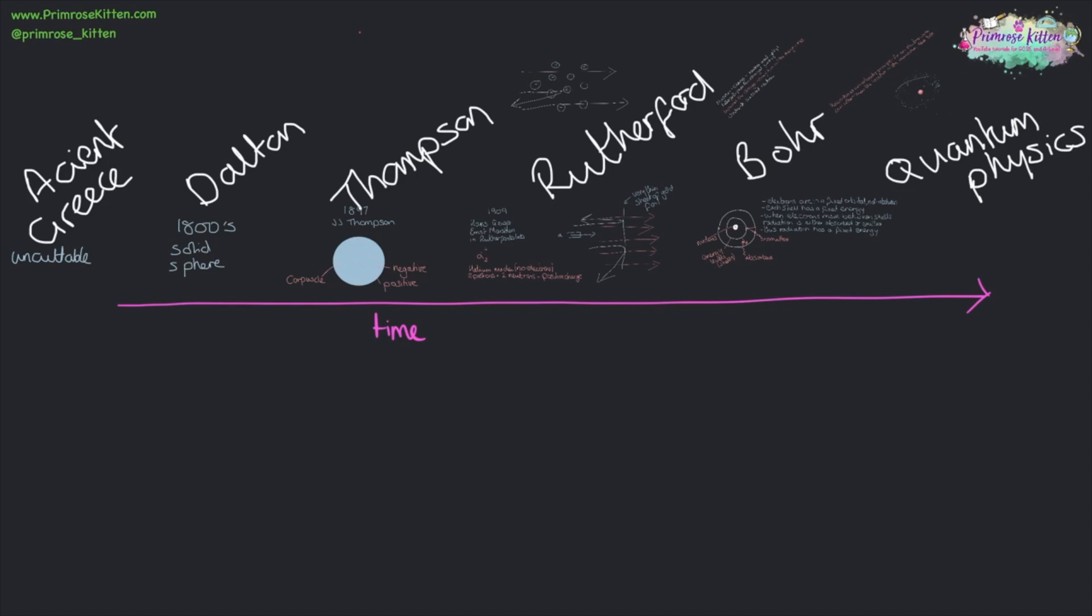The model of the atom has changed a lot over time, and it's changed because we have new developments and new discoveries. From ancient Greece, where they developed the word atom meaning uncuttable, to Dalton, where it was a solid sphere, JJ Thompson who discovered the electrons with a plum pudding model, a positive sphere with negative bits dotted through it. Rutherford, who did the plum pudding experiment and worked out that it had a solid center. Bohr, who developed the nuclear model of the atom.